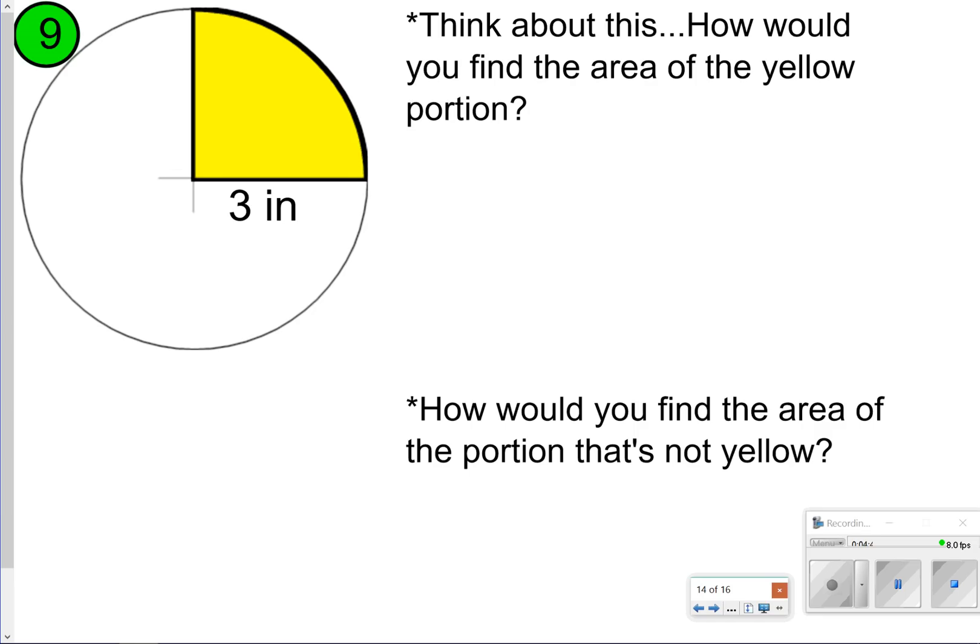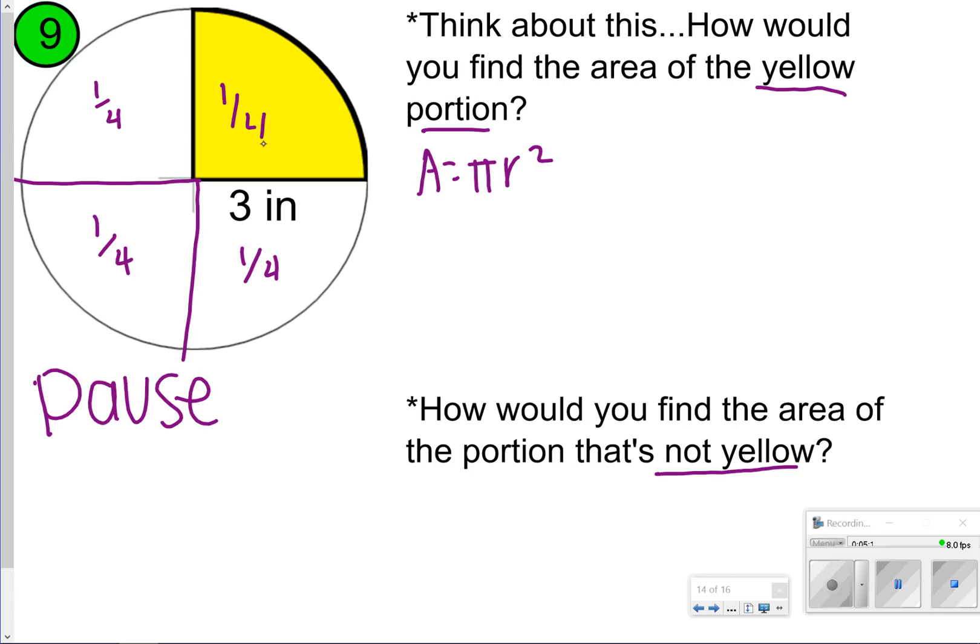The last one you're going to try, and this one is a little bit different. Notice that the only section we're finding is that yellow section, and that's 1 fourth of the circle. Go ahead and take time now to pause the video and just think about how would you find the area of just the yellow portion. You're still going to use your area formula, but since this is 1 fourth of the circle, we're going to divide everything by 4 to find 1 fourth of the circle. That'd be 3.14 times 3 times 3, and then divided by 4. So 3.14 times 3 times 3 is going to be 28.26, but when we divide that by 4, we're going to get 7.065, and that'll be inches squared.